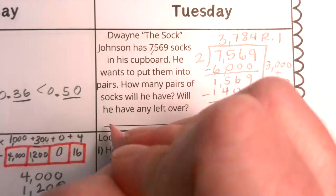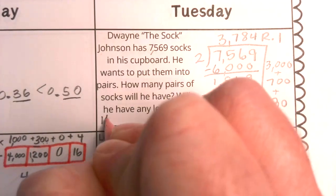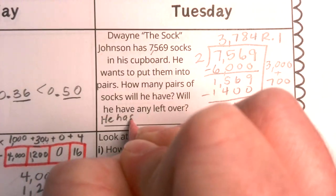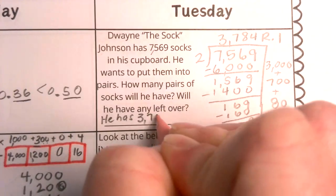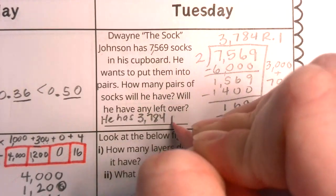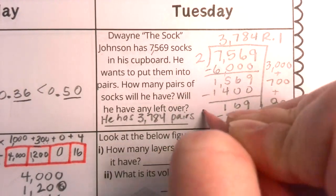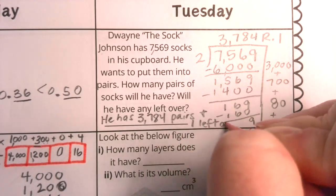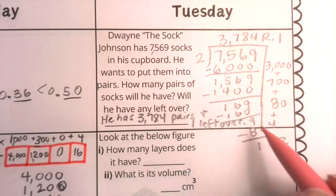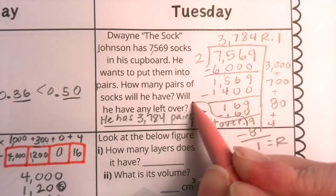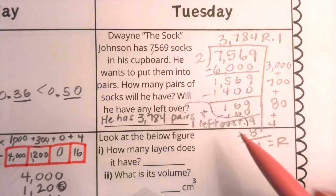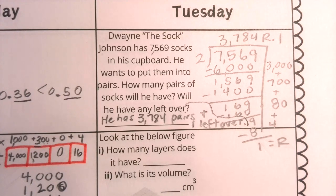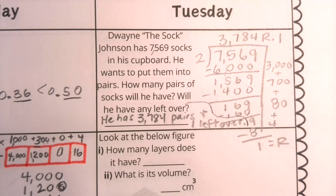So how many pairs will he have? He has 3,784 pairs and one left over. There always seems to be one sock left over that doesn't have a partner. And sure enough, that even happens here with Dwayne, the sock Johnson.